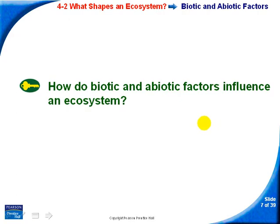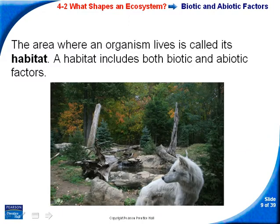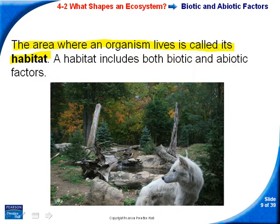Biotic and abiotic factors influence an ecosystem by determining the survival and growth of an organism and the productivity of the ecosystem. A habitat is the area where an organism lives. For example, a wolf's habitat might include woods near water, fallen trees, particular types of trees, cover, temperature, sunlight, and the other small animals present — those are all part of its habitat.